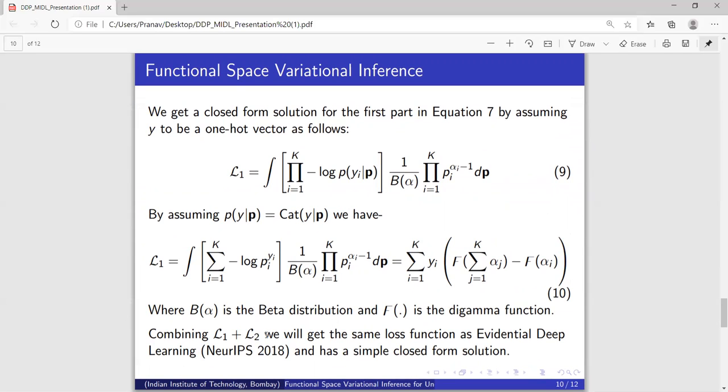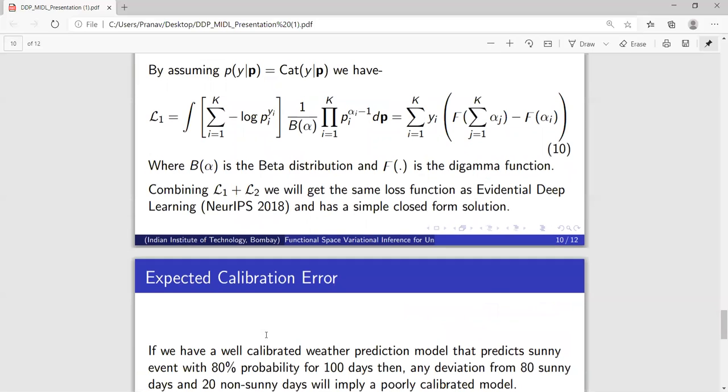Combining L1 plus L2 will give us the same loss function as evidential deep learning. The only missing thing is that we have also taken into account out-of-distribution samples and made them more uncertain. Otherwise, both are exactly the same.